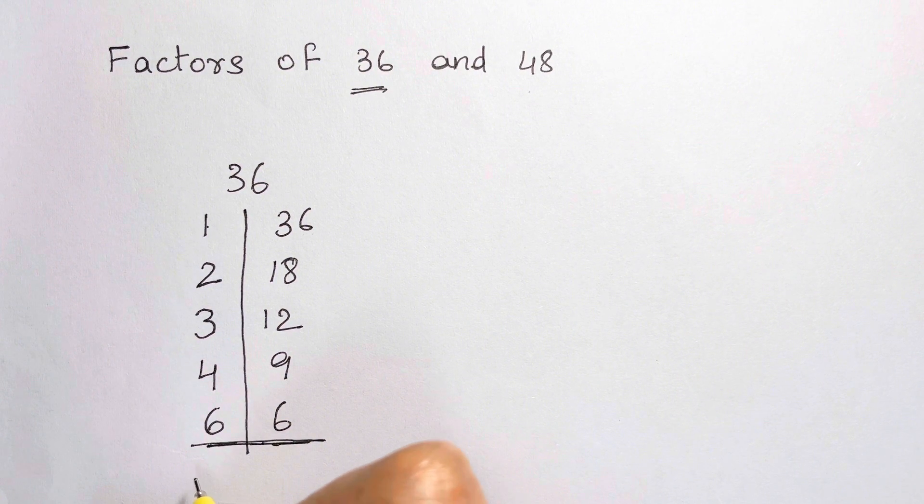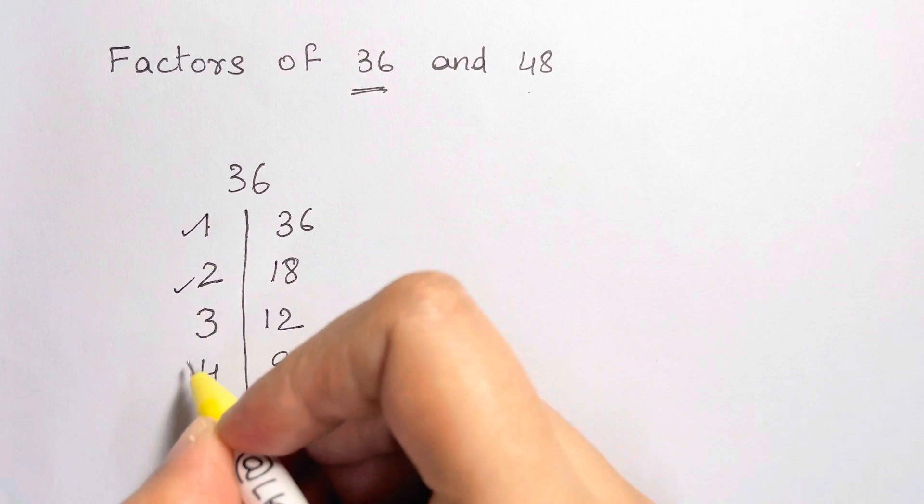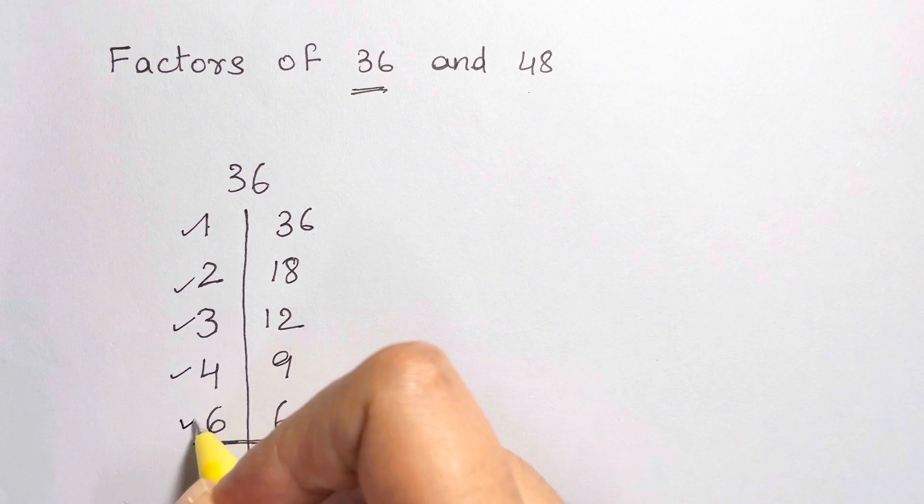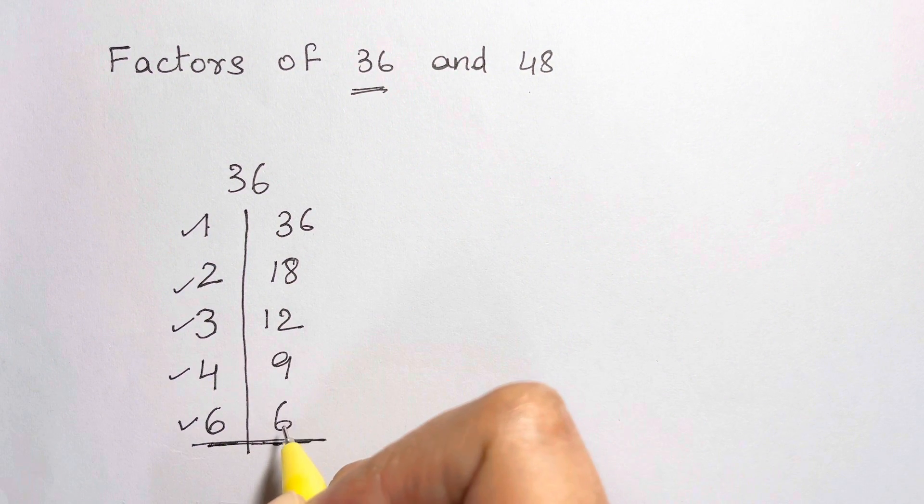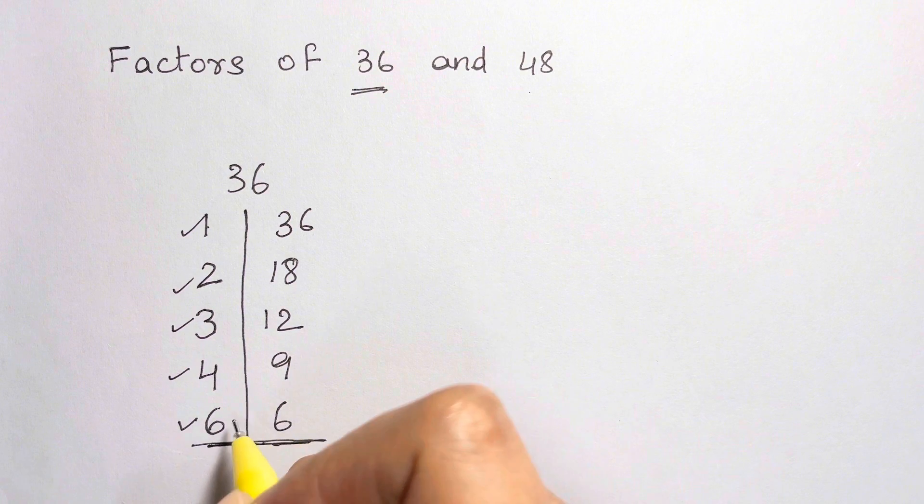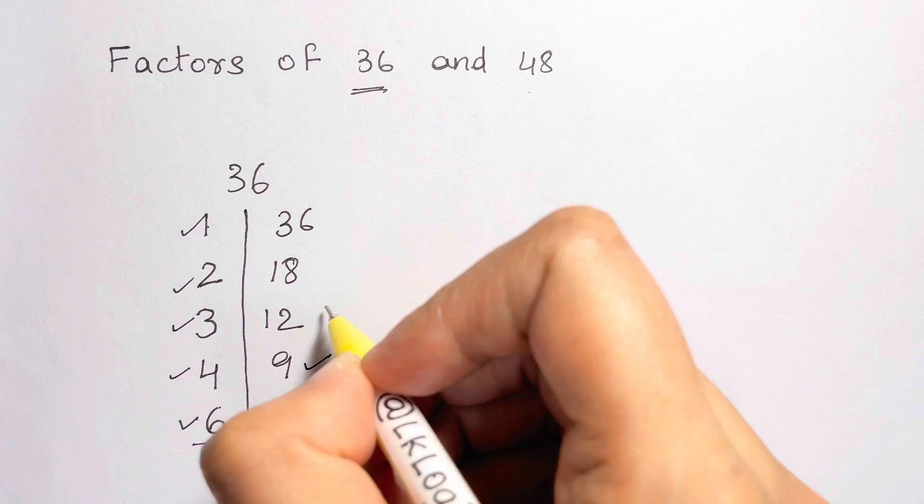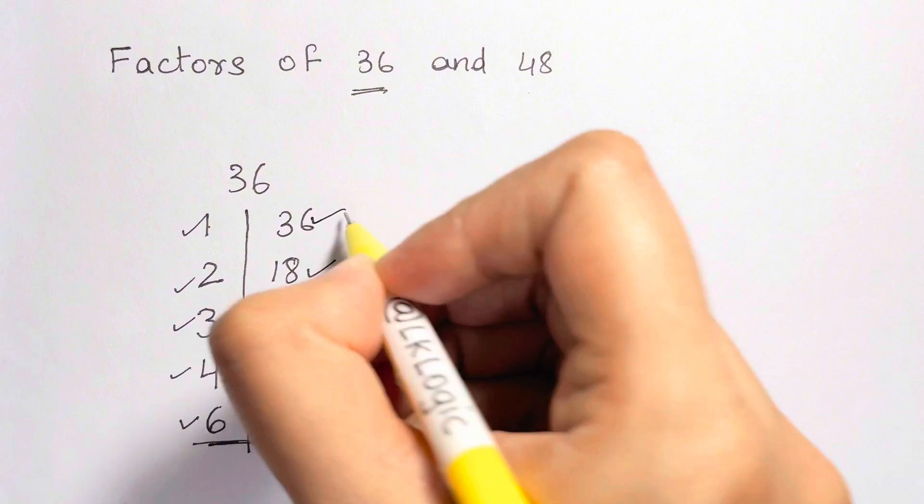Now, I've got all my factors. 1, 2, 3, 4, 6. Now, you can read 6 once. It's written twice, so you can read it once. 9, 12, 18, 36.